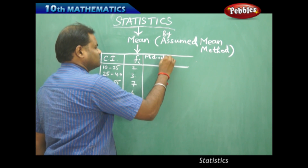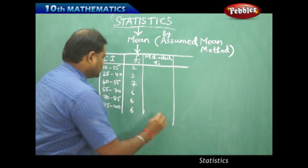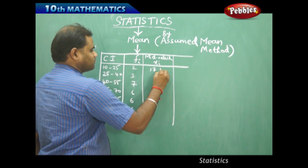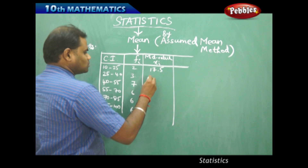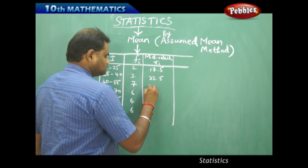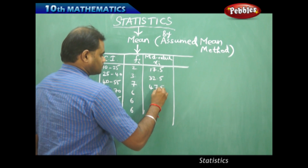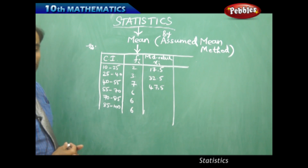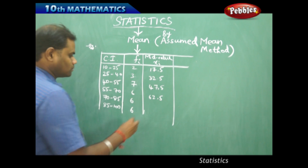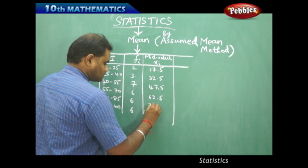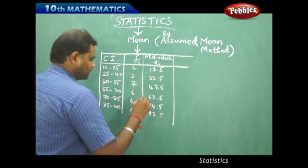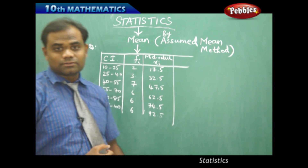For example, the mid-value of the first class interval is 35/2 = 17.5, then 65/2 = 32.5, then 95/2 = 47.5, then 125/2 = 62.5, then 155/2 = 77.5, and finally 185/2 = 92.5. These are the different mid-values xi for each class interval.